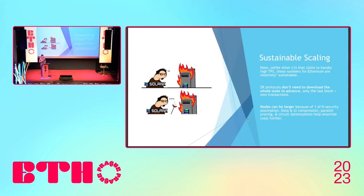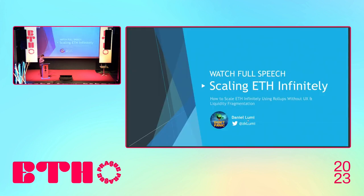This is sustainable scaling — unlike some blockchains like Solana. You only need that one prover to execute transactions, and even if the prover goes down, it's not a security incident, it's a liveness failure. With optimizations like data and transaction compression and making provers more efficient, we'll scale the blockchain even more. I do have a speech coming out probably in Paris on scaling ETH — essentially how to scale ETH infinitely without UX issues across L3s and without liquidity fragmentation.